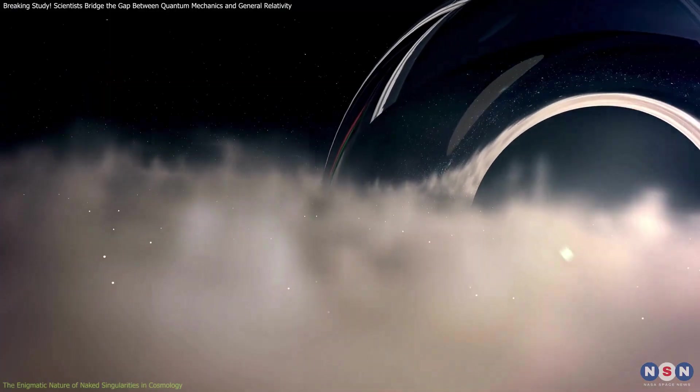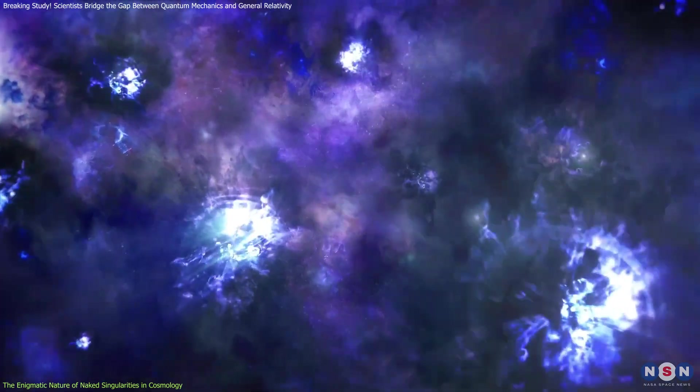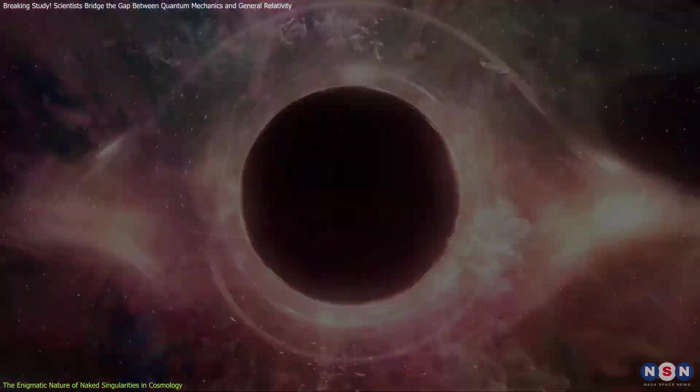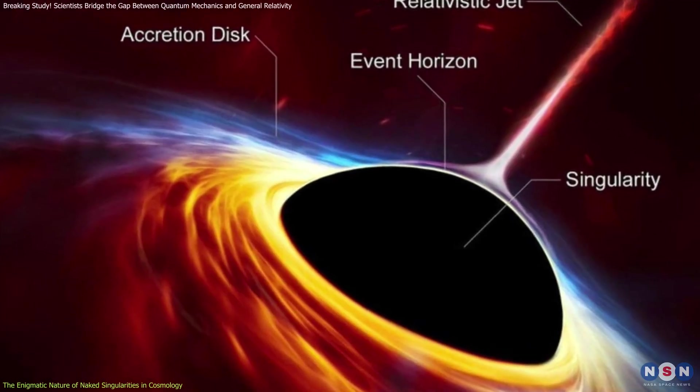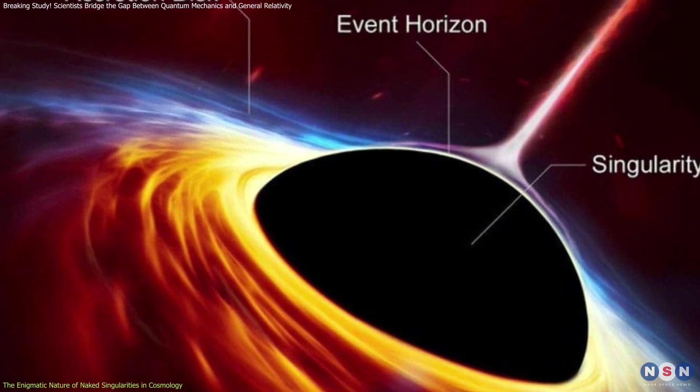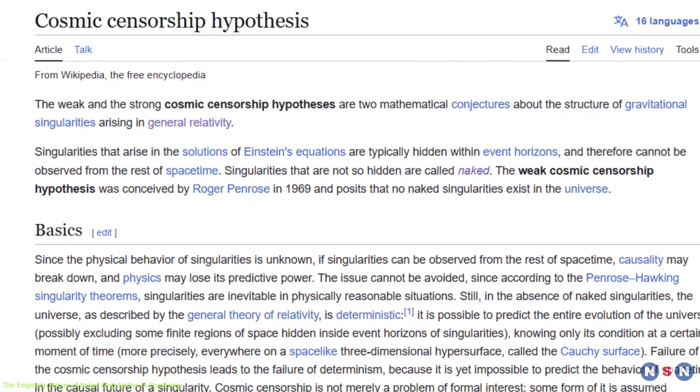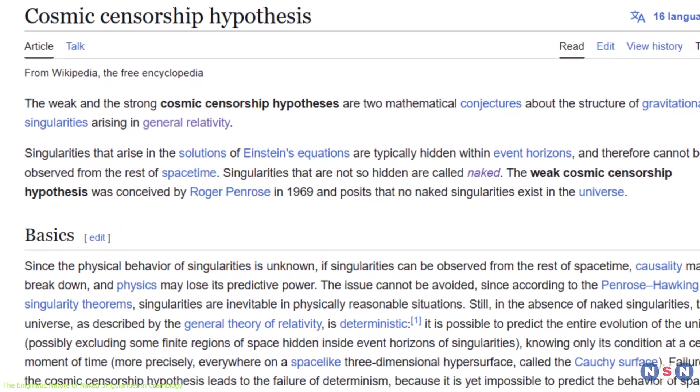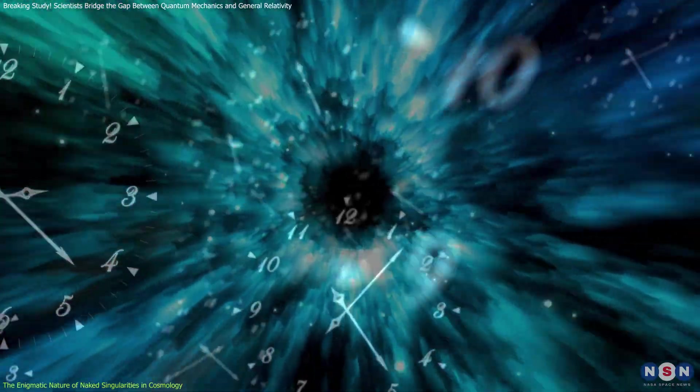In the realm of astrophysics, black holes remain some of the most intriguing and mysterious phenomena. These entities, formed by the gravitational collapse of massive stars, contain singularities. These are regions where density becomes infinite, and the laws of physics as we know them cease to apply. Traditionally, these singularities are thought to be hidden within black holes behind event horizons, which prevent any form of direct observation. This idea, encapsulated in the cosmic censorship conjecture, suggests that singularities are forever concealed from view, preserving the predictability of space-time.